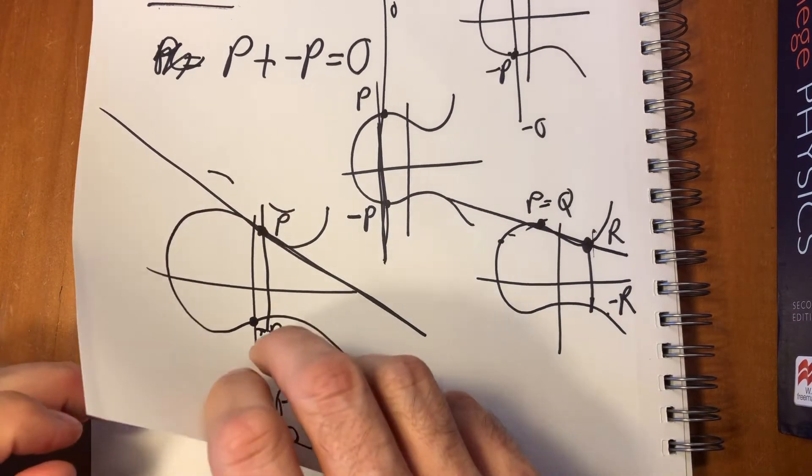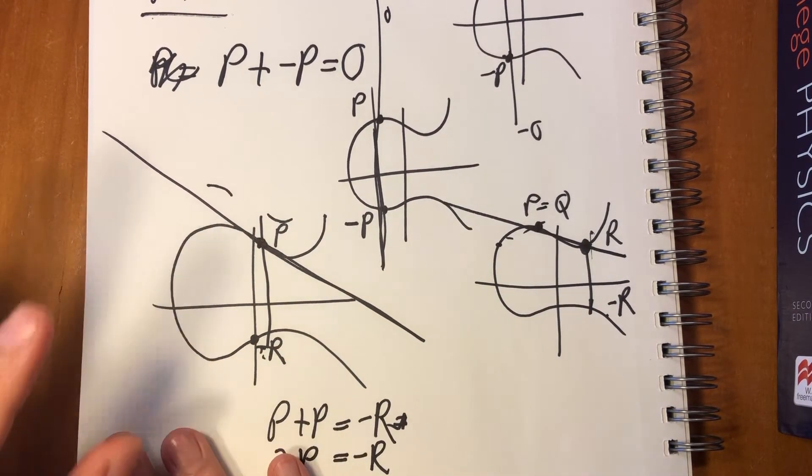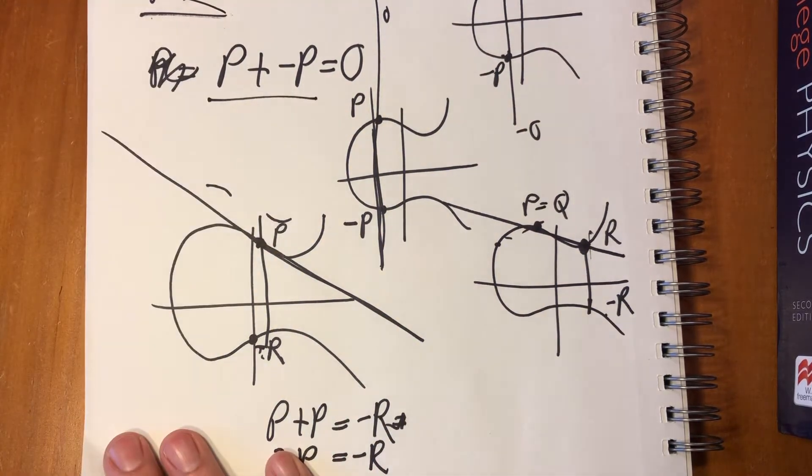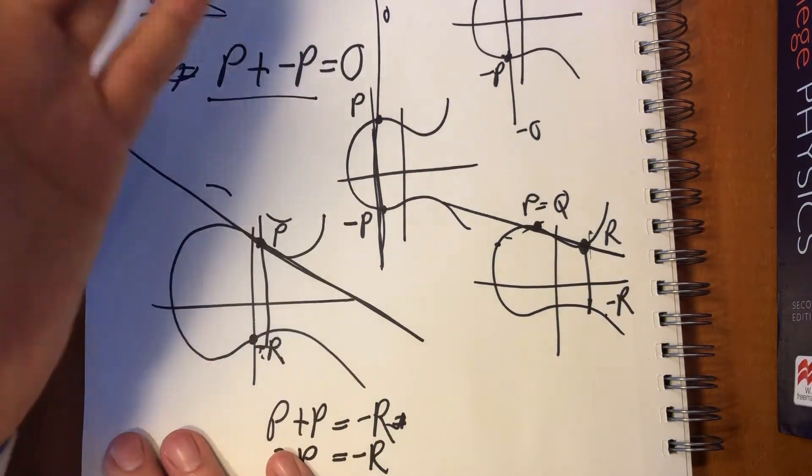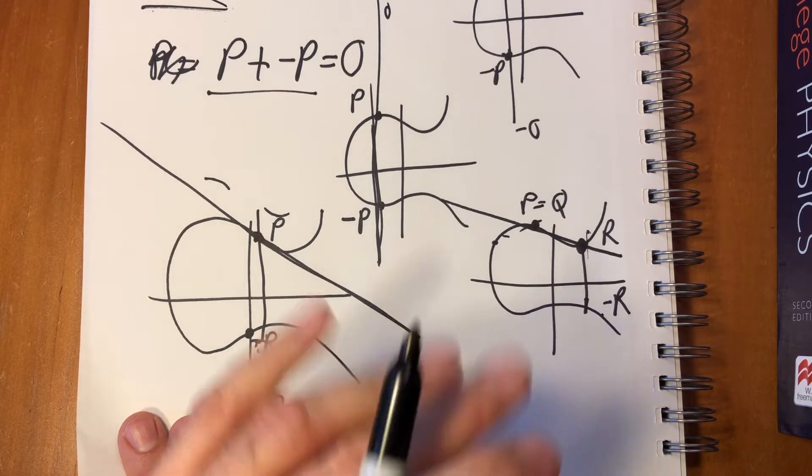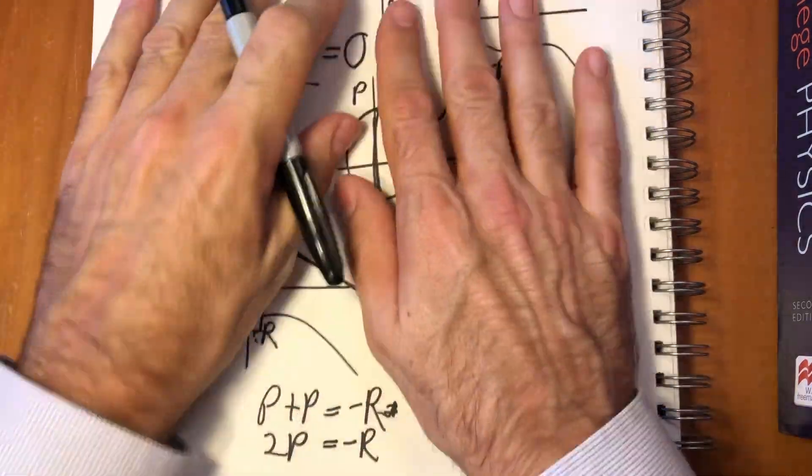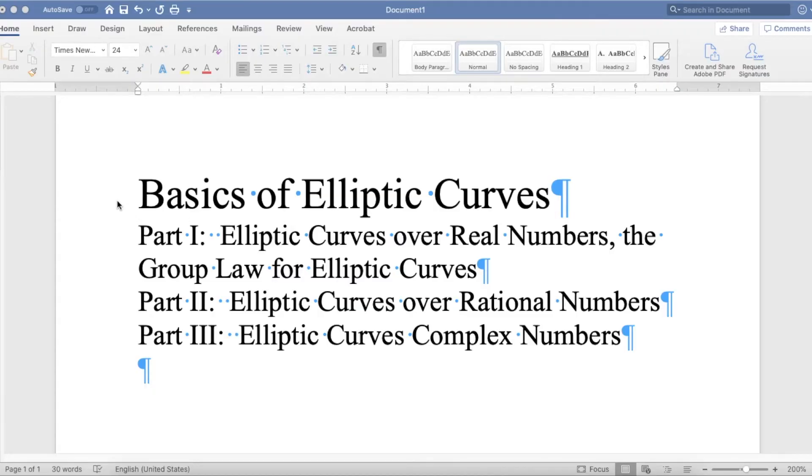That's everything we need to know that there's a group. There's an identity, there are inverses. There's an associative law I think is kind of obvious, but for now we'll trust that we have that anyway. This is how to define it. So this is all over real numbers. That is it for part one, elliptic curves over real numbers, and the group law for elliptic curves.